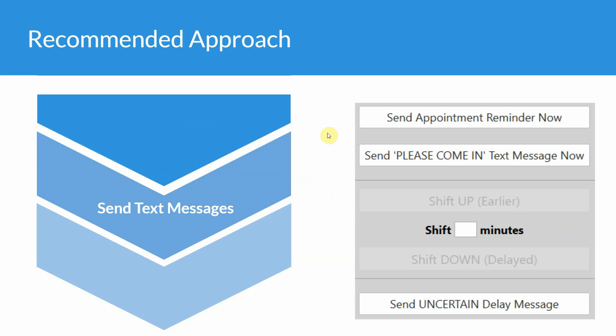You can send appointment reminders to tell patients exactly when their appointment is. Send the please-come-in text message immediately. Or you can select one or more patients and shift them up or down in the schedule, then immediately notify them that their appointment has been moved to that new time. You can also send uncertain delay messages — for example, if the machine is down and you don't know when you'll be able to reschedule, it will send a message saying you will contact them as soon as possible once the delay is sorted out.